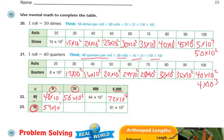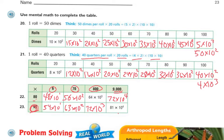And then I have 70 times 90. 7 times 9 is 63. Times I have 2 zeros, so that's going to be the second power of 10. Now I have 800 times 90. 8 times 9 is 72, and I have 1, 2, 3 zeros, so that's going to be the third power of 10. And they did the last problem for you: 9,000 times 90. 9 times 9 is 81, and there are 3 zeros here and 1 zero there, so it's going to be the fourth power of 10.